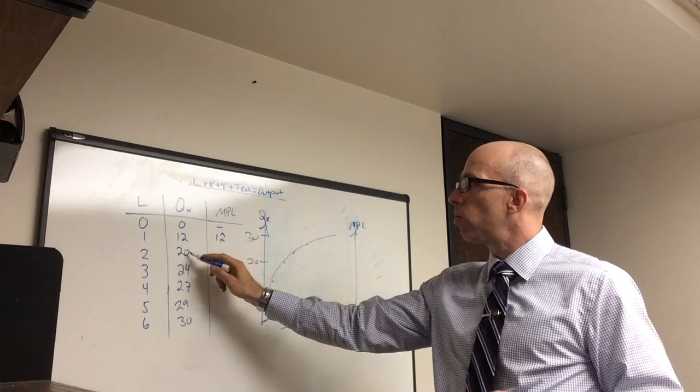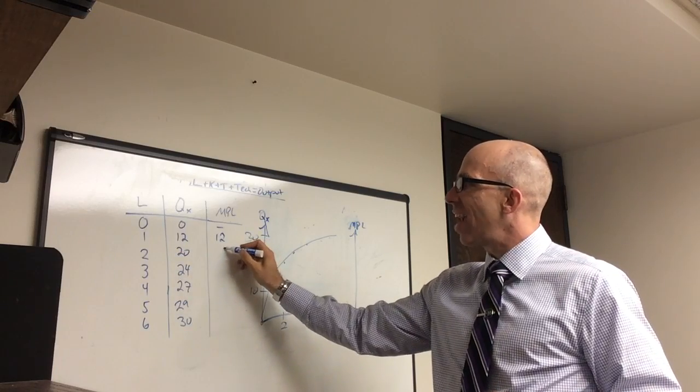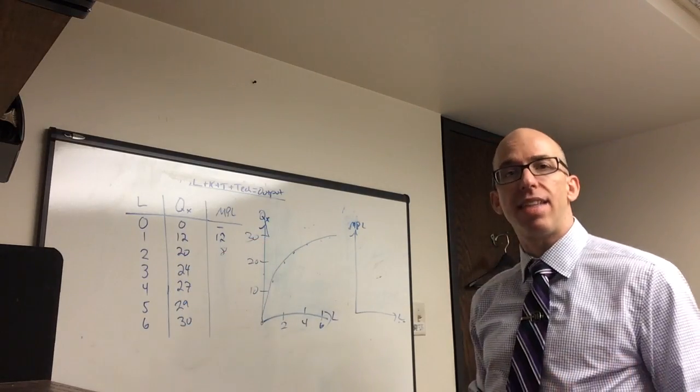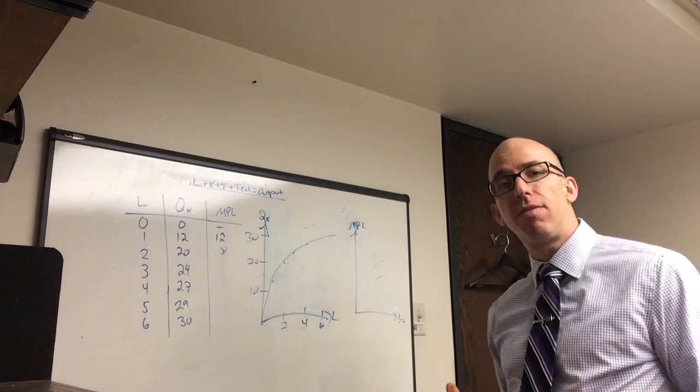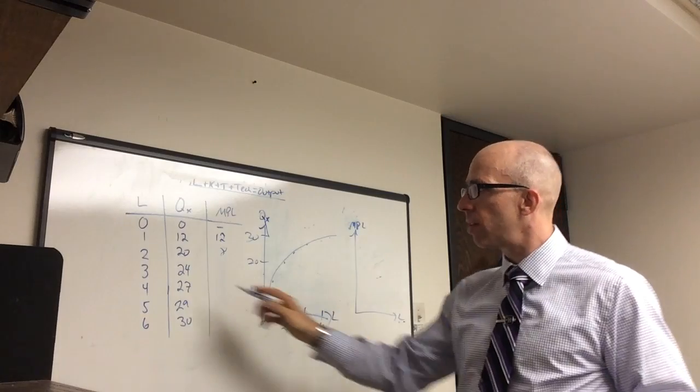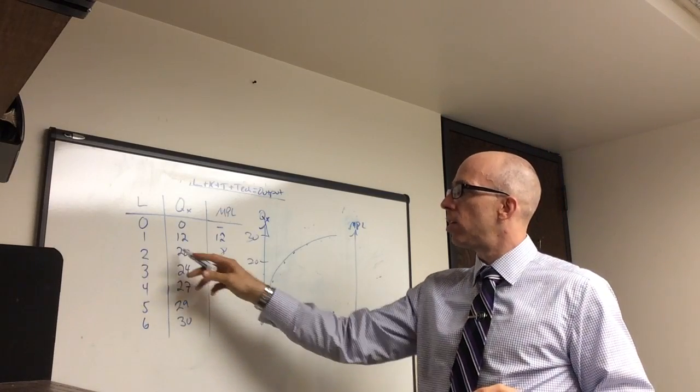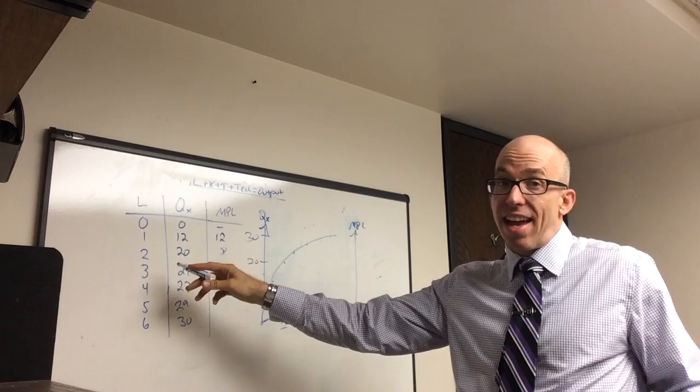Now, the second worker doesn't produce all 20. The second worker only adds 8 additional. 20 minus 12 is 8. That's what the second worker brings that wasn't already done by the first worker. Now, sometimes students say, what about 20 divided by 2? Don't they each produce 10?